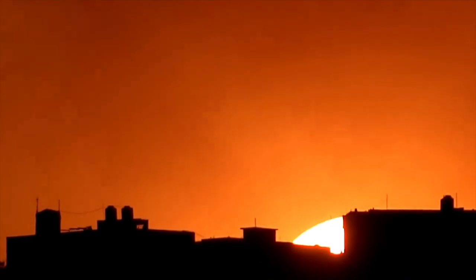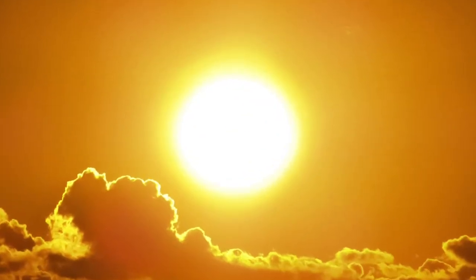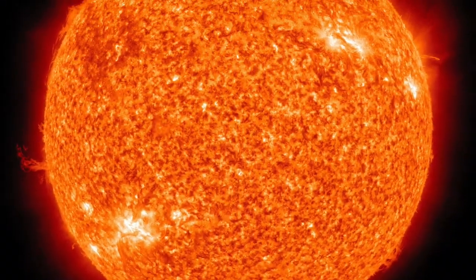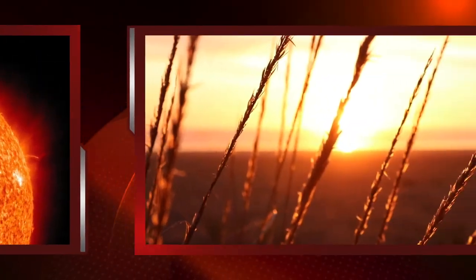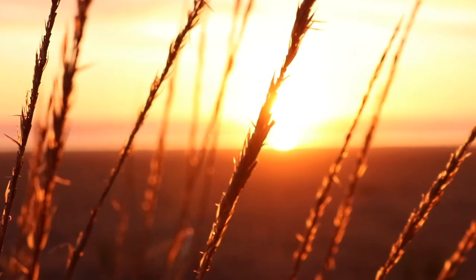When the material ejected from the sun's surface hit the magnetic field surrounding the Earth, it triggered the strongest geomagnetic storm seen in years. Since the solar storm wasn't particularly powerful, most people probably didn't even know what happened.